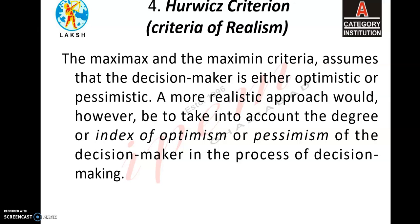Hurwicz criteria is also known as the criteria of realism, and it is also known as the weighted average criteria. This criteria is based on Hurwicz's concept of coefficient of optimism or pessimism. It is a compromise between the criteria of optimism — that is maximax — and the criteria of pessimism — that is maximin. The decision maker makes a balance between the maximum and minimum for each alternative by weighting them according to his degree of optimism and pessimism.